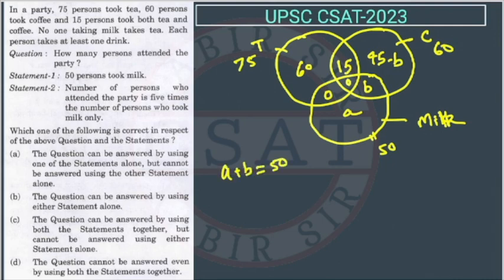Even if we add all the regions, there is still one unknown variable B. We do not know the value of B, so we cannot find how many people attended the party. Therefore, through Statement 1 alone, we cannot find the answer.